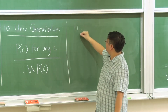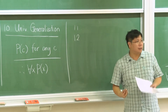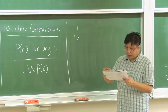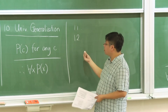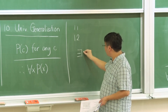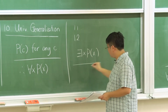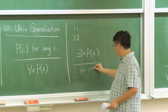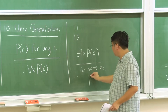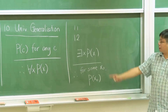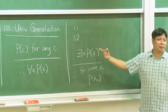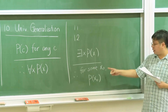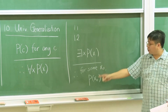Rules 11 and 12 are about existential quantifiers: existential instantiation and existential generalization. For existential instantiation: suppose we have 'there exists x such that P(x).' Then I can conclude that for some particular x₀, P(x₀) is true. I don't know which x₀ it is, but I know for sure that some such x₀ exists.